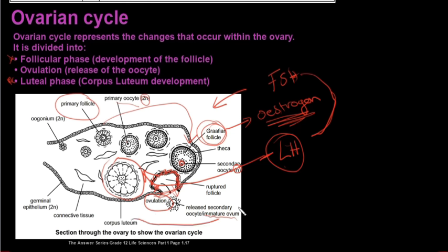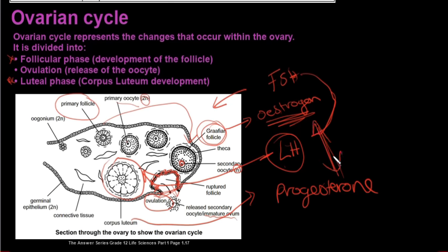The corpus luteum secretes progesterone, and a little estrogen. Both of these hormones play a role in maintaining the endometrial lining for implantation — causing the endometrial tissue to become thicker, bloody, and mucousy, so it can provide nutrition for the developing embryo. If fertilization does occur, the corpus luteum maintains the endometrium until the 12th week of pregnancy. If fertilization does not occur, the corpus luteum degenerates, hormones are no longer secreted, and the endometrial lining breaks down.